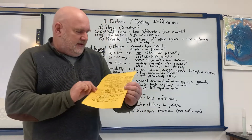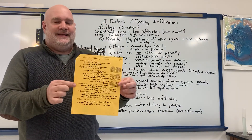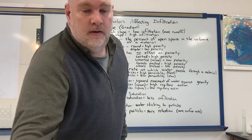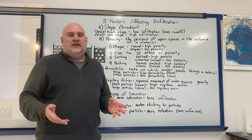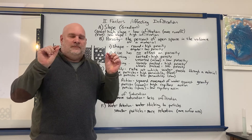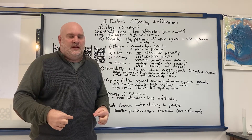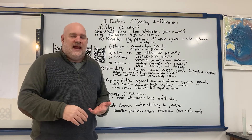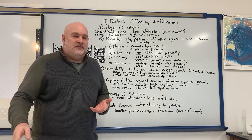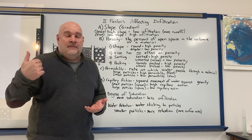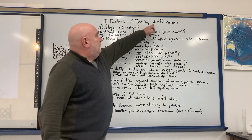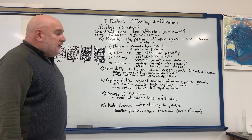Today we're looking at factors affecting infiltration. Along with the water cycle, condensation is the process where clouds form; when water droplets get too big they fall as precipitation. When precipitation hits the ground, a few things can happen: some plants take in, some runs off the surface, some evaporates, and some soaks into the ground — that soaking in is infiltration.